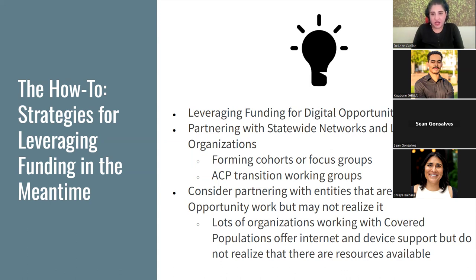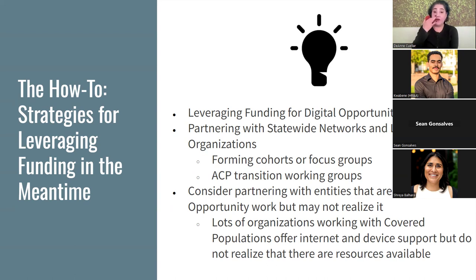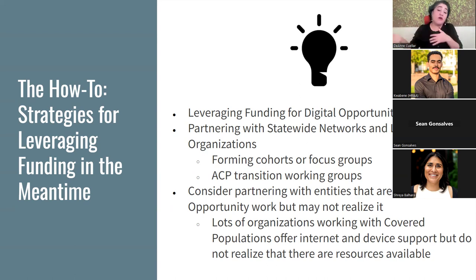We will be working on a checklist. We are watching the ACP news out of Washington very closely and hopefully will have that shareable tool for you very soon. Consider partnering with entities that are doing digital opportunity work but may not realize it. Lots of organizations working with covered populations offer internet and device support but do not realize there are resources available to them. Bigger organizations like the San Antonio Area Food Bank might know about it, but churches with food pantries or smaller organizations that provide smaller, low-capacity models of digital inclusion work might not know these resources are available. It's a great opportunity to bring stakeholders in.